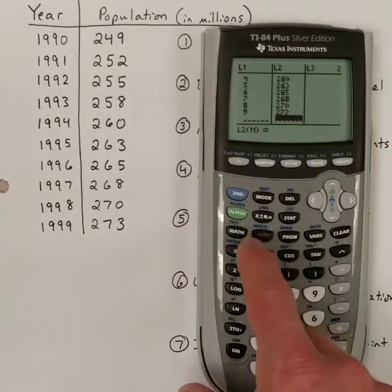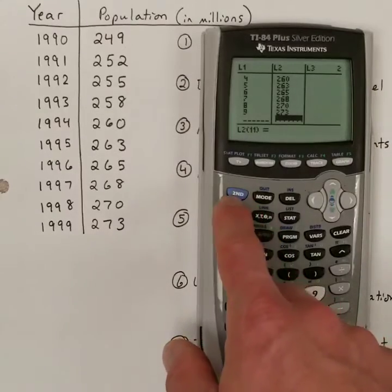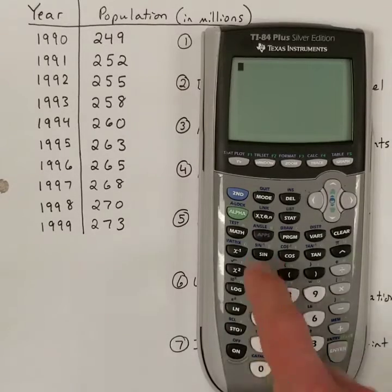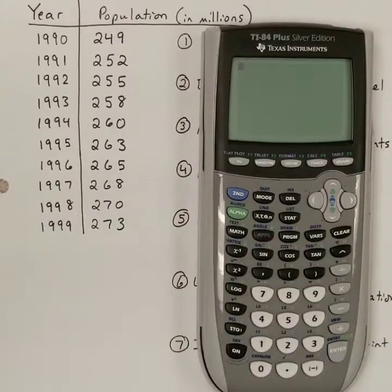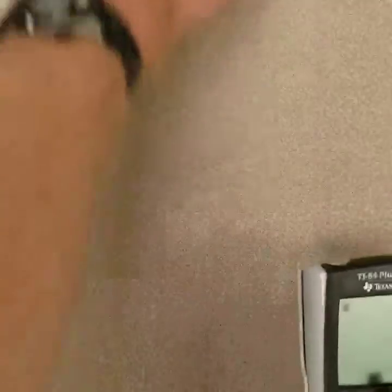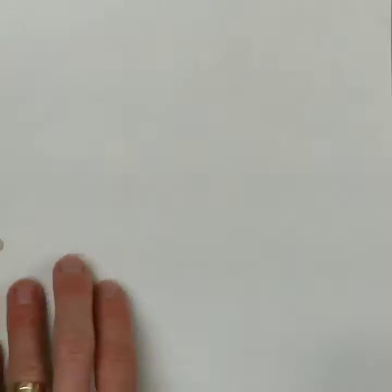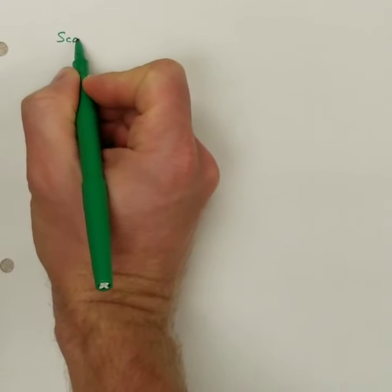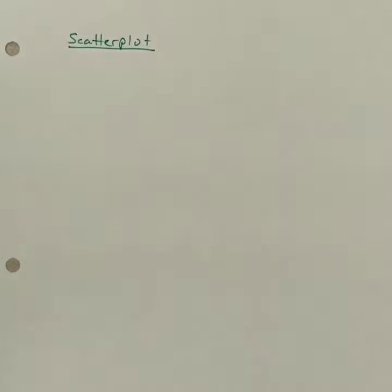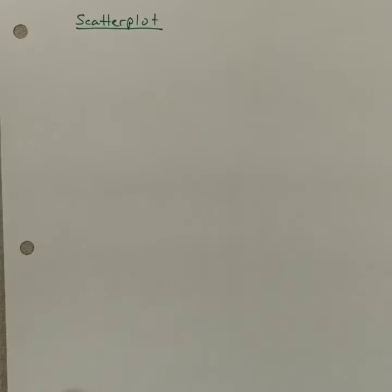The next thing we're going to do is quit, so hit 2nd and then mode. Go back to the home screen. And then we're going to hit 2nd stat plot. While I'm doing this, actually, I'm going to write down some of these instructions. Now that I've got the data entered, I'm going to move that piece of paper out of the way. Bring another one in. And I'm going to fill in some of these instructions.